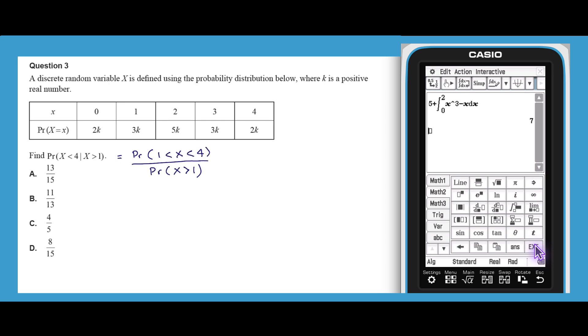The conditional probability asked for is equal to the probability of x between 1 and 4 over the probability of x greater than 1. This is equal to the probability of x equals 2 plus the probability of x equals 3 over the probability of x equals 2 plus probability of x equals 3 plus probability of x equals 4. In this fraction, all the k's cancel and we get a probability of 8 over 10 or 4 over 5, which is answer C.